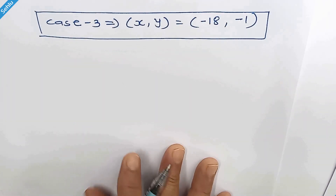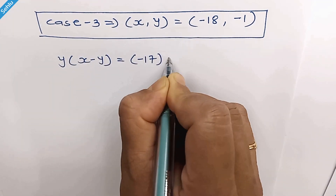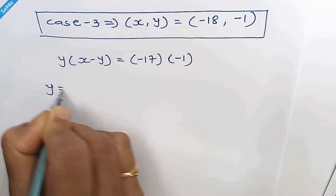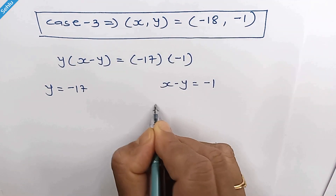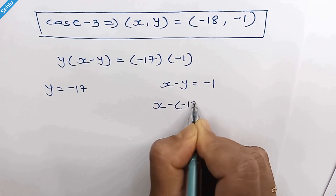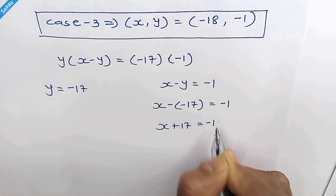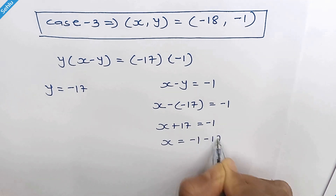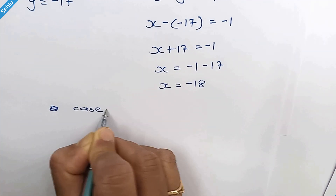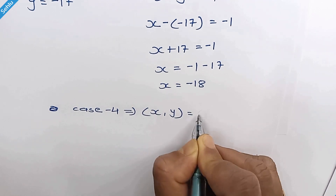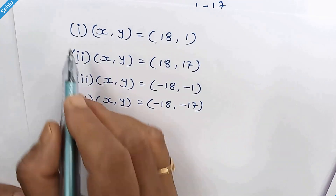For Case 4: negative 17 times negative 1. Comparing, y equals negative 17 and x minus y equals negative 1. So x minus negative 17 equals negative 1, meaning x plus 17 equals negative 1, giving x equals negative 18. For Case 4, x is negative 18 and y is negative 17. These are the answers.